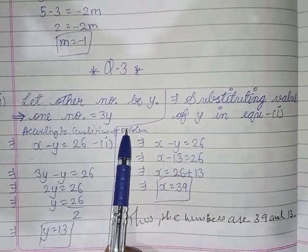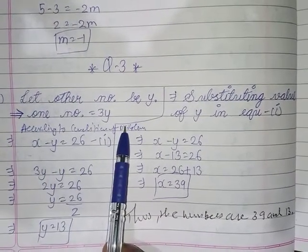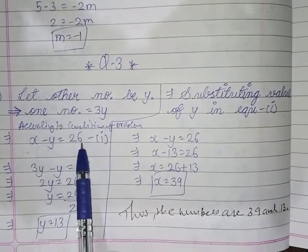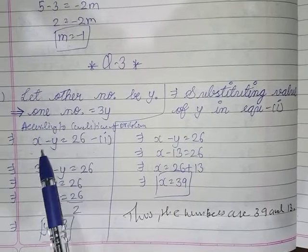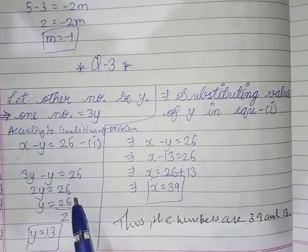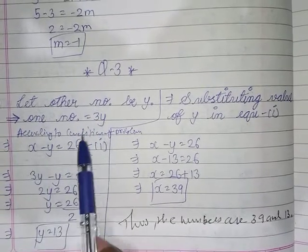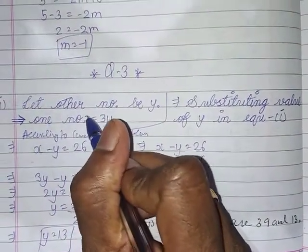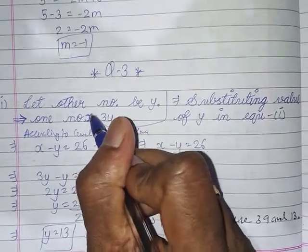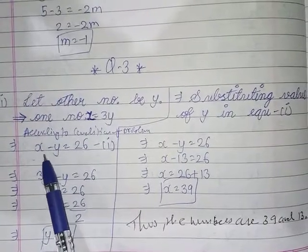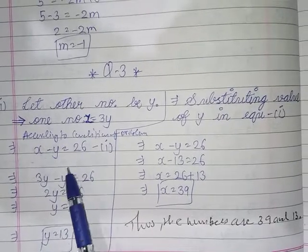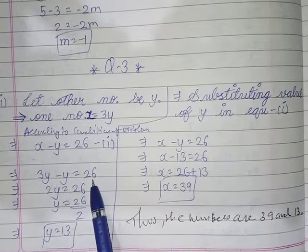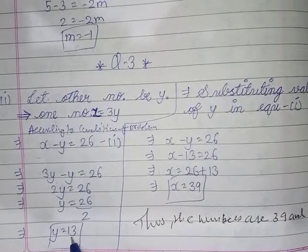According to the condition of the problem, one more equation is given: the difference between the two numbers is 26. So x minus y equals 26. What is x? Let us substitute x as three y. So three y minus y equals 26. So y equals 13.